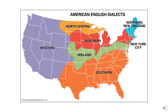We can still see this sort of straight western migration in our modern dialect map of American English dialect regions. You can see where those Midland dialects, northern dialects, and southern dialects just went straight west in this part of the country.